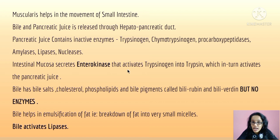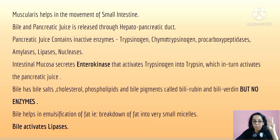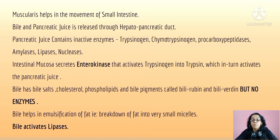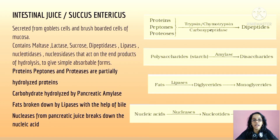The intestinal mucosa secretes enterokinase, which activates trypsinogen into trypsin, which in turn activates the other pancreatic enzymes. Bile contains bile salts, cholesterol, phospholipids, and bile pigments called bilirubin and biliverdin. It is very important that bile has no enzymes. Bile helps in the emulsification of fat — the breakdown of fat into small micelles — and bile also activates lipases.